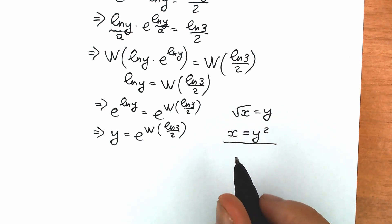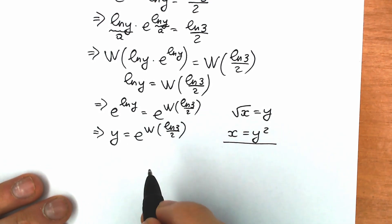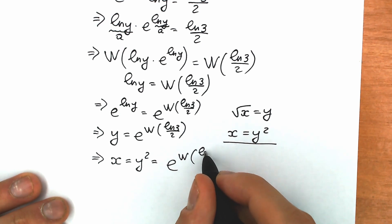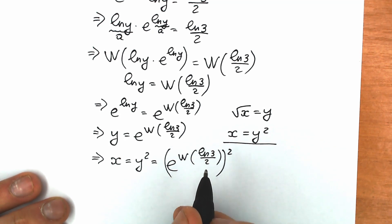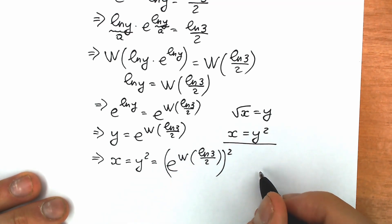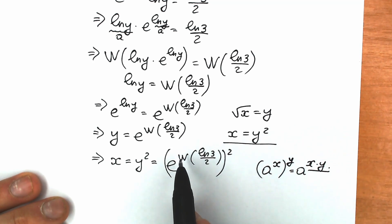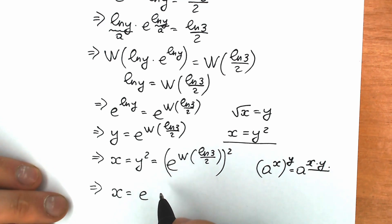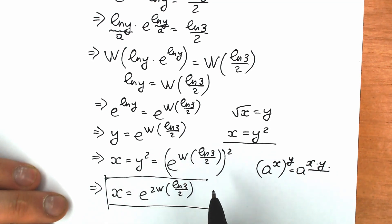We need to square our expression on the right side. So x equals y squared equals e to the power Lambert W of natural log 3 over 2, all squared. We can simplify: when we square e to the power something, we multiply the exponent by 2. So our final answer is x equals e to the power 2 times Lambert W of natural log 3 over 2.